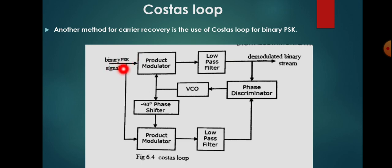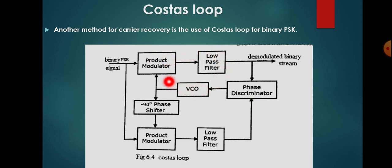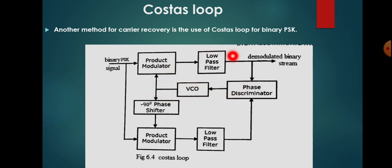The phase-shifted signal is applied here and there are two paths: an upper path and a lower path. The upper path is a phase comparator and the lower path is another phase comparator. Here also we are using a PLL — there is a low pass filter, then a VCO, and a product modulator acting as a phase comparator. This forms the phase-locked loop in the upper section and also in the lower section. The difference is that a 90-degree phase shifter is used in the lower path. There are two phase comparators: one in the upper section and one in the lower section, with a voltage controlled oscillator forming a negative feedback system.